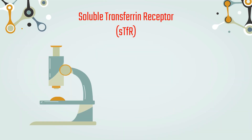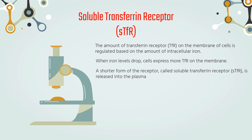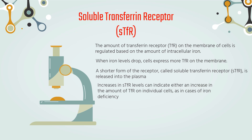Soluble Transferrin Receptor. The amount of transferrin receptor on the membrane of cells is regulated based on the amount of intracellular iron. When iron levels drop, cells express more transferrin receptors on the membrane. A shorter form of the receptor, called soluble transferrin receptor, is released into the plasma and can be measured using an immunoassay. Increases in soluble transferrin receptor levels can indicate either an increase in transferrin receptor expression on individual cells, as in cases of iron deficiency anemia.